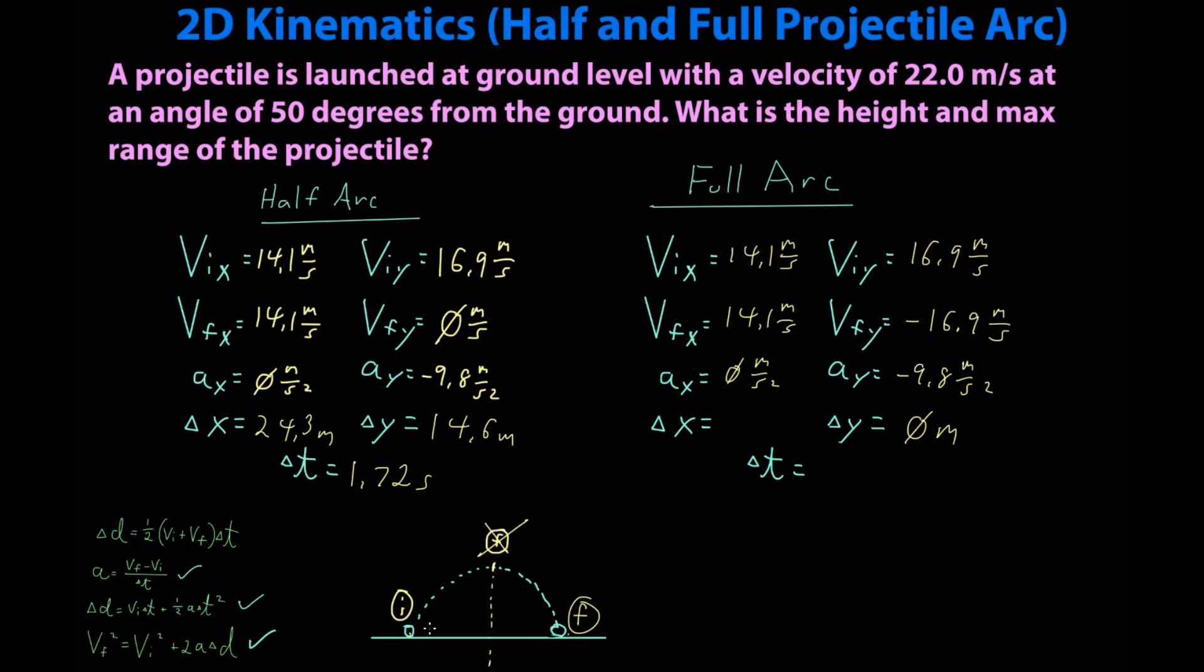If this is perfect symmetry, then the time it takes to go halfway is half the time it takes to go the full way. Therefore if I take delta t and multiply by 2, I will get 3.44 seconds. Here is my new time.